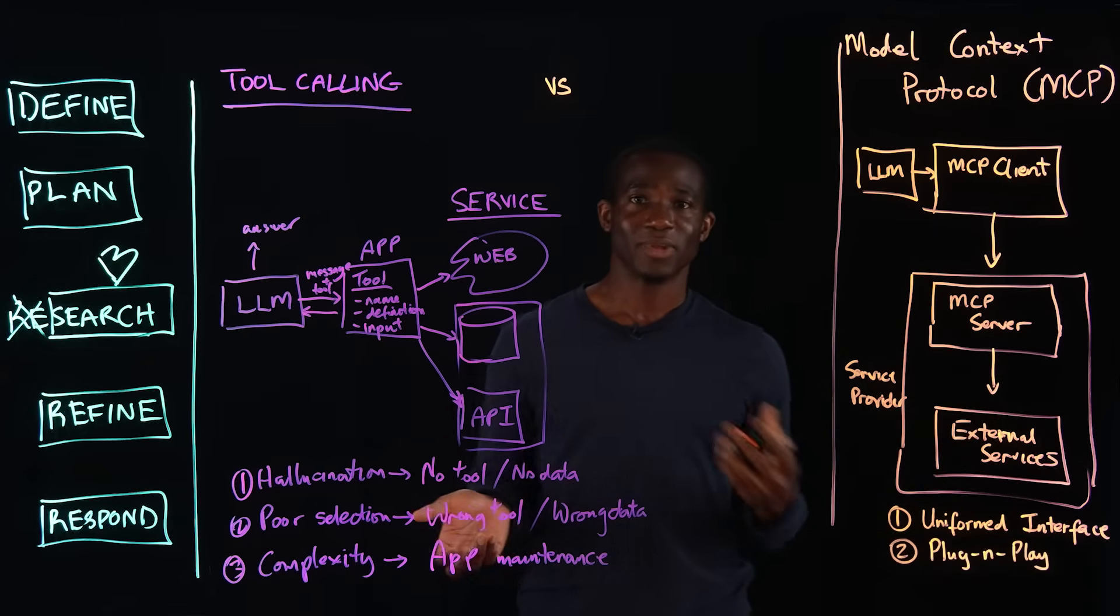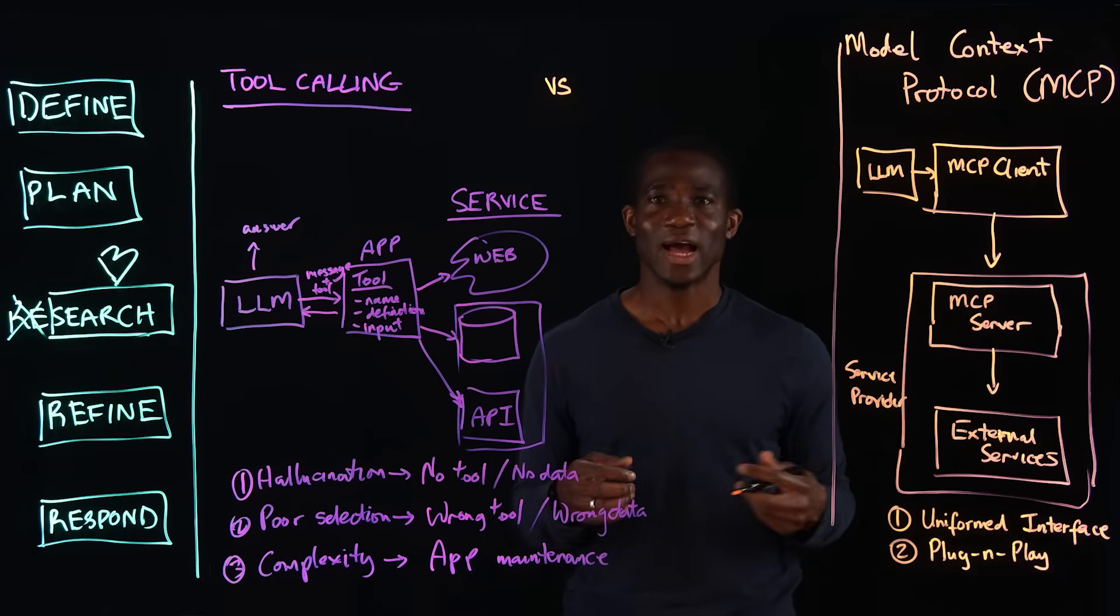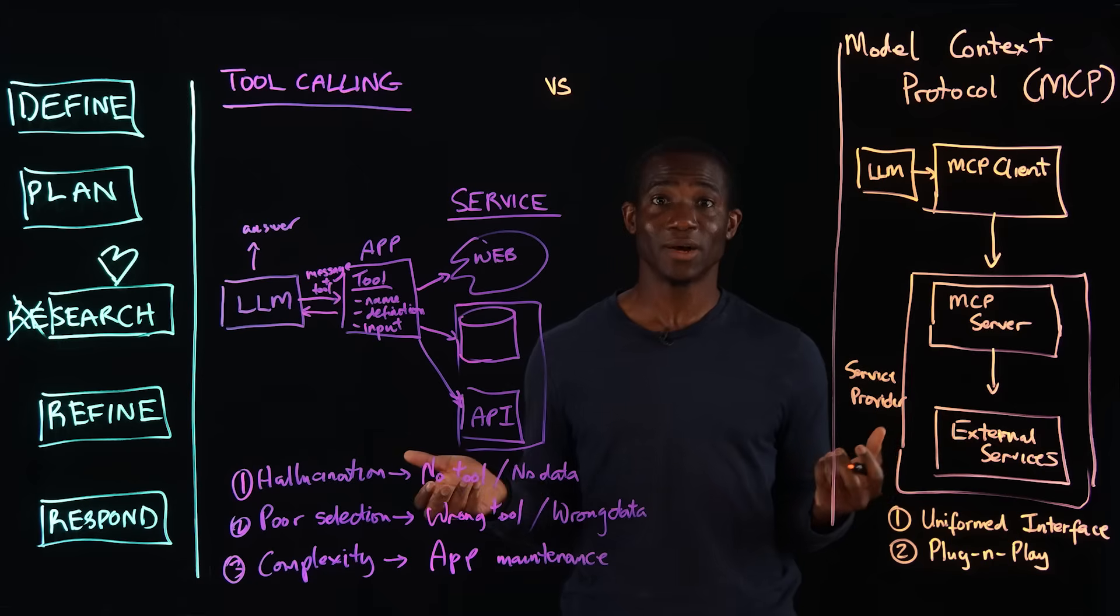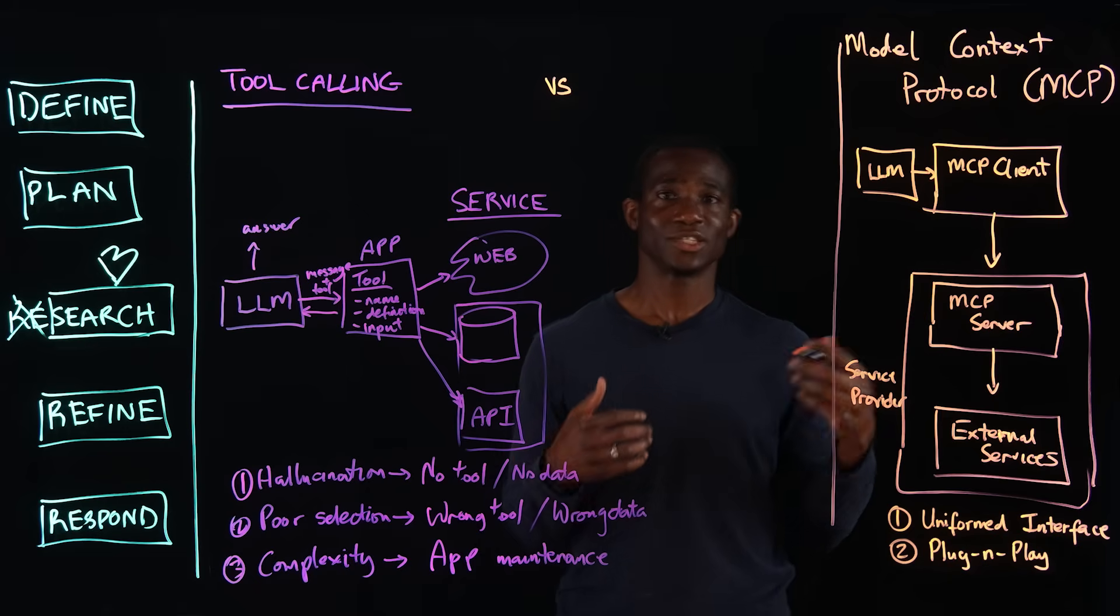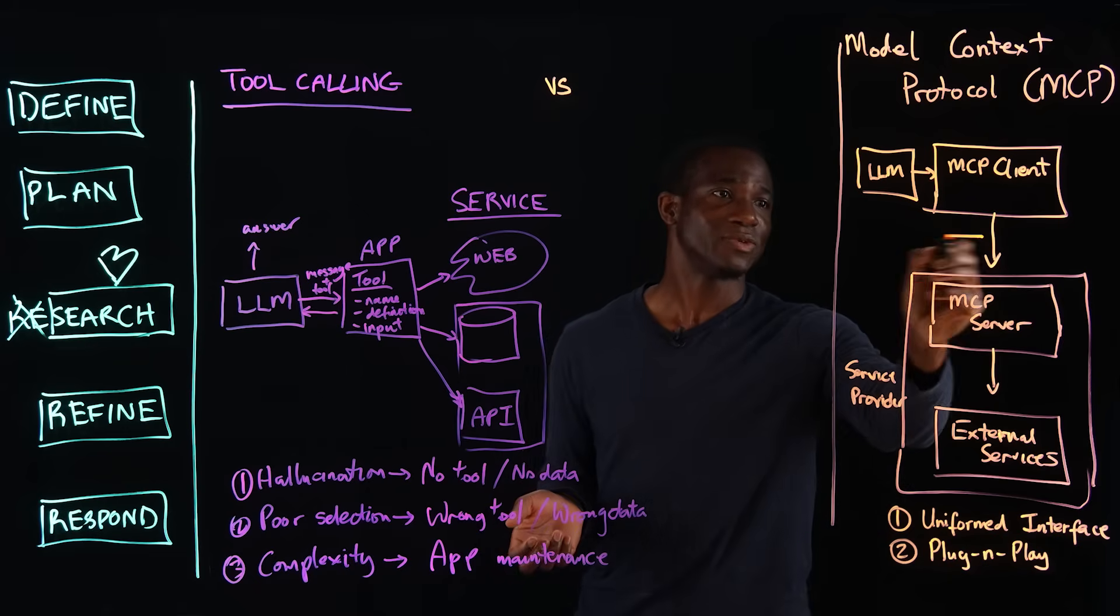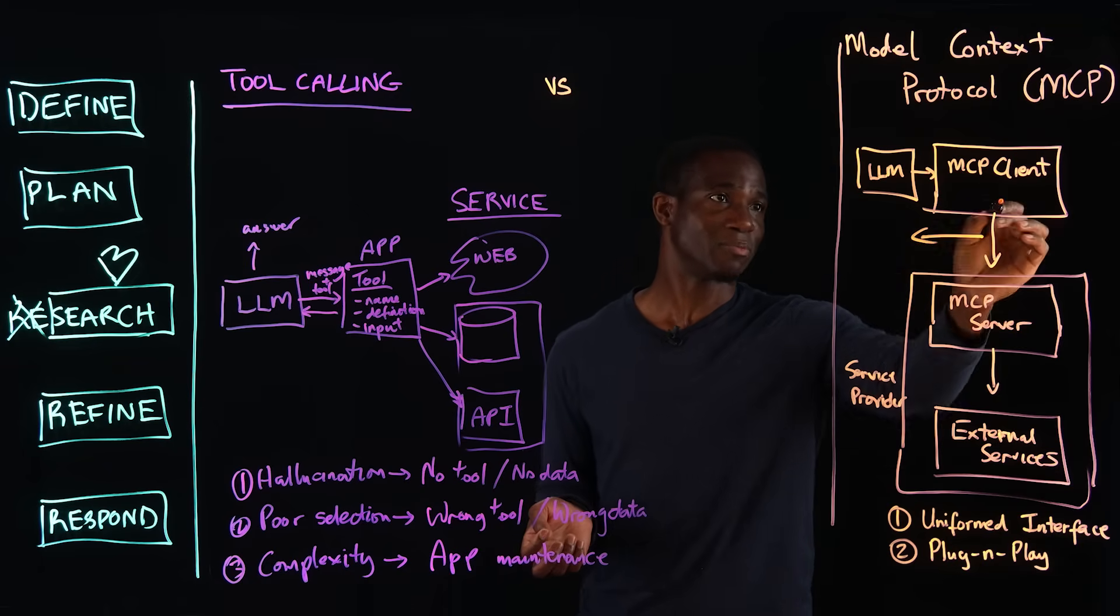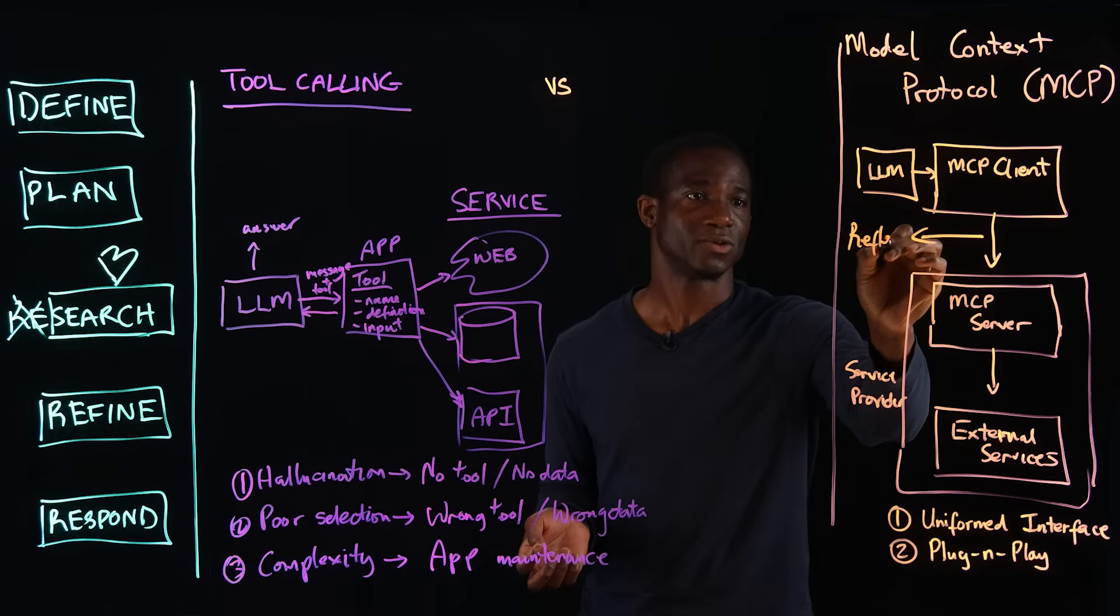It's also plug and play. So, similar to how USB-C offers a universal connectivity for multiple devices, MCP allows AI models to connect seamlessly and to switch between services. And that uses or takes advantage of the protocol between the client and the server called reflection.